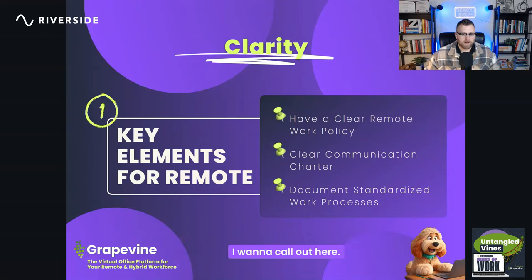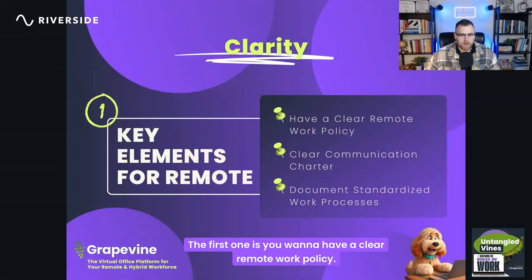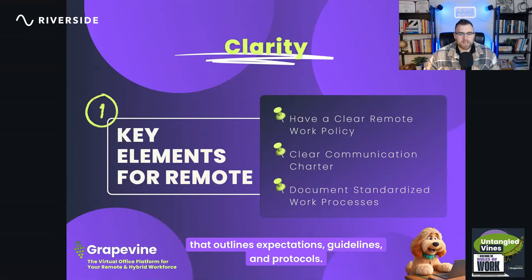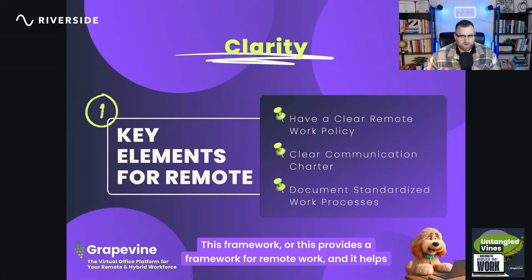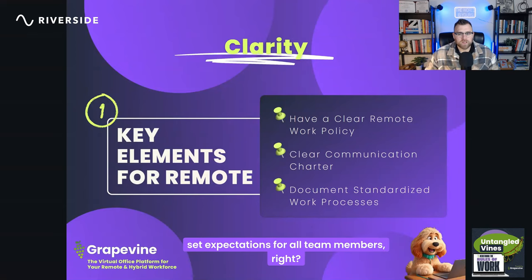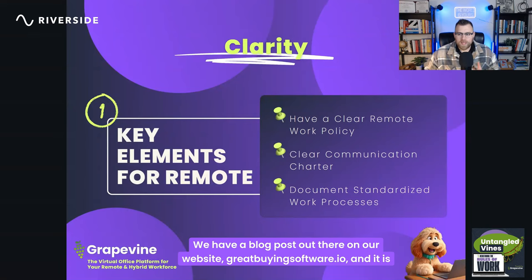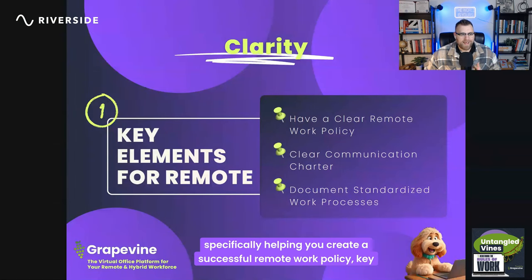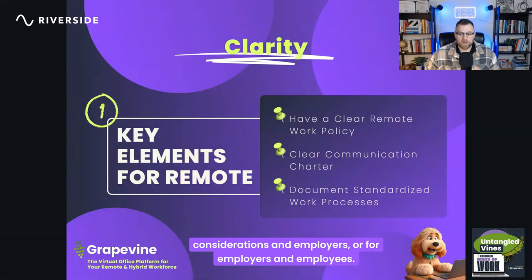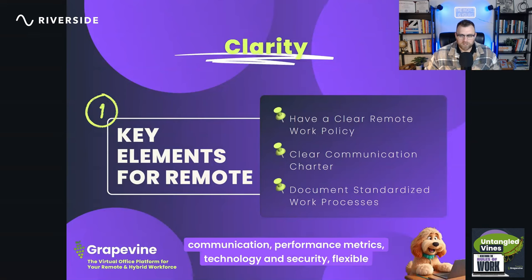When speaking about clarity and remote work, there are three things to call out. First, you want to have a clear remote work policy. This is where you establish and communicate a policy that outlines expectations, guidelines, and protocols. We have a blog post on our website, grapevinesoftware.io, specifically helping you create a successful remote work policy — covering clarity of communication, performance metrics, technology and security, and flexible policies.